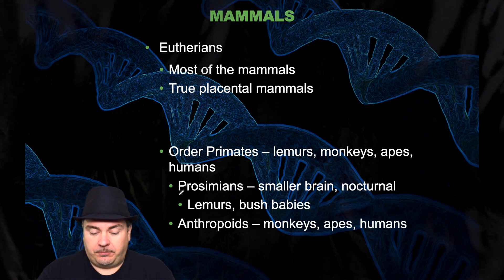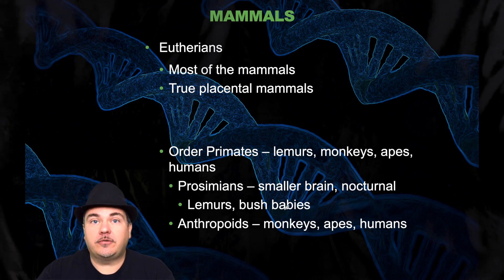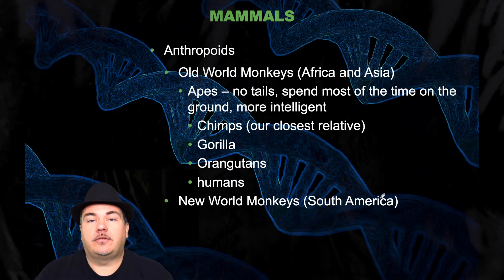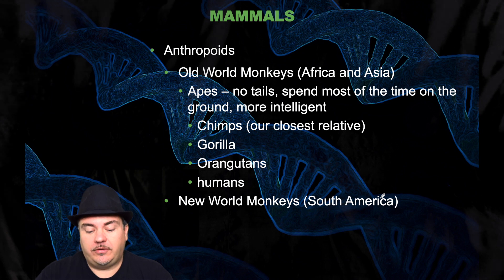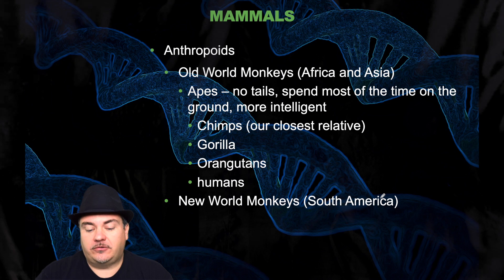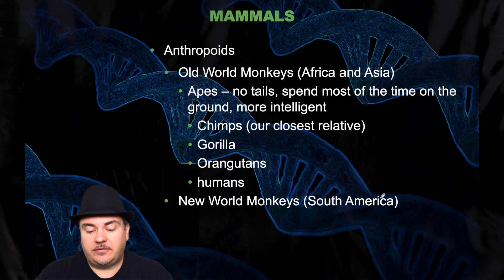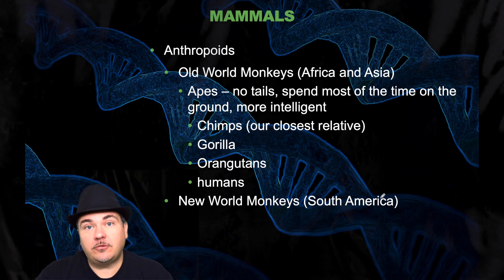You have the prosimians, which have a smaller brain and are nocturnal — these are animals like lemurs or bush babies. Then you have the anthropoids, which are the monkeys, apes, and humans. The anthropoids are divided into the old world monkeys and the new world monkeys. The old world monkeys were found originally in Africa and Asia. Apes have no tails, spend most of their time on the ground, and are more intelligent. Chimps are one of humans' closest living relatives. Gorillas, orangutans, and humans are also included here. The new world monkeys originated in South America.